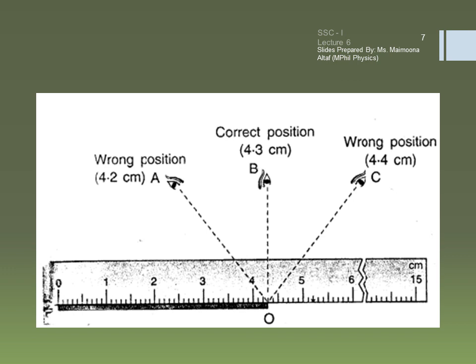One point which we must consider before taking any reading is the position of our eye. While measuring length or distance, the eye must be kept vertically above the reading point as shown in the figure. The reading becomes doubtful if the eye is positioned either towards the left or towards the right of the reading point. So, for accurate measurement, our eye must be kept just vertically above the reading point.